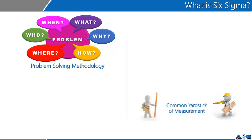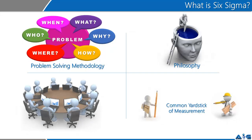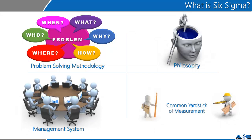Practitioners started to use Six Sigma as a common yardstick of measurement of business processes. They further went ahead, and Six Sigma success stories gave them a lot of lessons. Six Sigma was also started to be used as a philosophy, and in its last usage, as a management system.